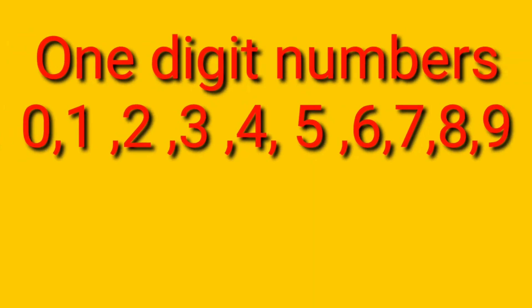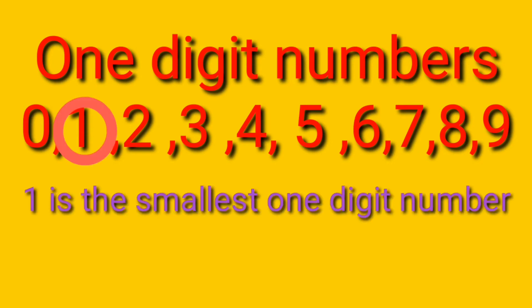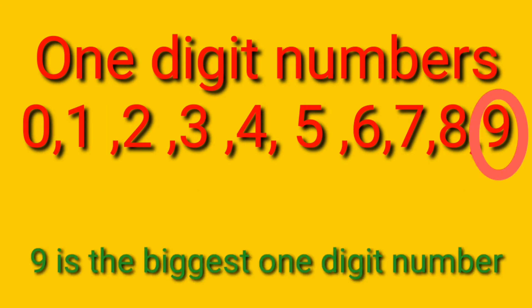Students, in your previous class you have already studied the one digit numbers and the two digit numbers. Let's once recall which are the one digit numbers: 0, 1, 2, 3, 4, 5, 6, 7, 8, and 9. In these numbers, 1 is the smallest one digit number and 9 is the biggest one digit number.